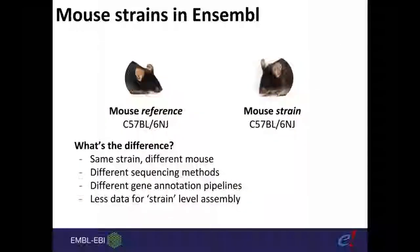C57BL/6NJ is the same strain as the mouse reference, but they are different mice — the genetic material came from different individuals. The sequencing methods were also different: the mouse reference was the second sequenced mammalian genome, assembled some time ago, whereas the mouse strains use more recent sequencing methods. They also have different gene annotation pipelines within Ensembl, and broadly speaking there is less data available for the strain-level assemblies.